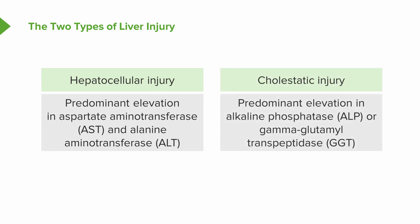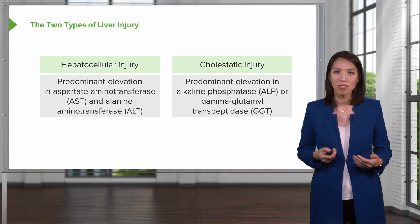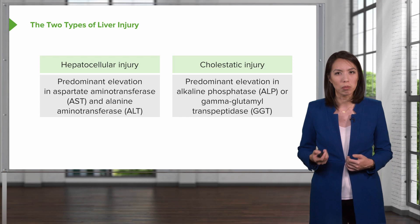The second type is a cholestatic injury pattern, where there is a predominant elevation in the alkaline phosphatase, ALP, or GGT. If you remember these two key patterns of liver injury, you'll be able to interpret most liver tests.